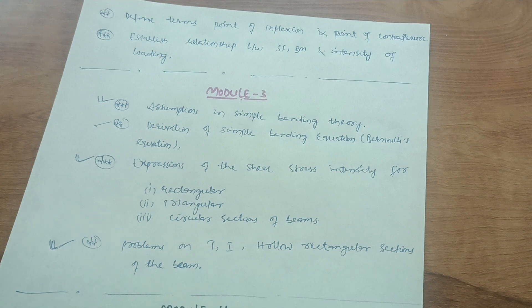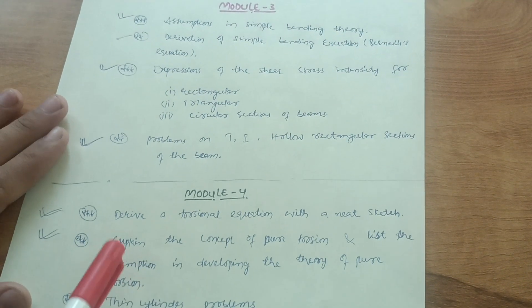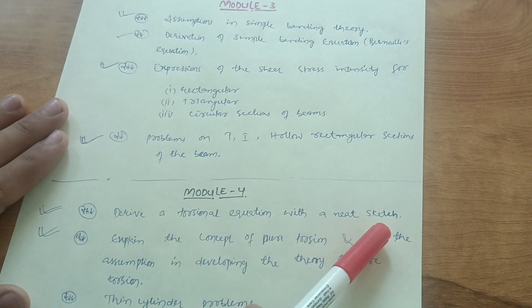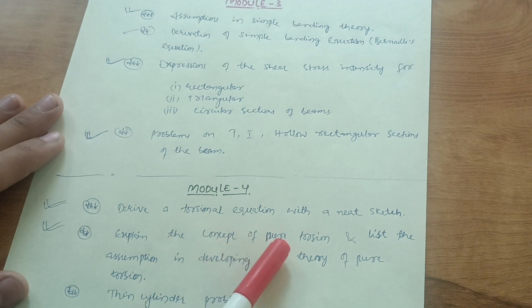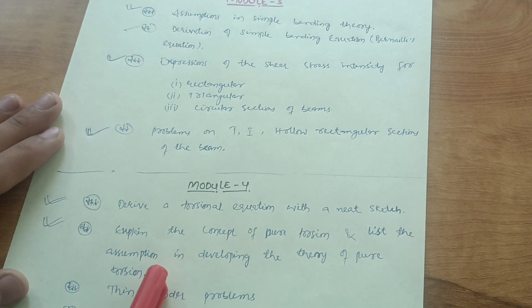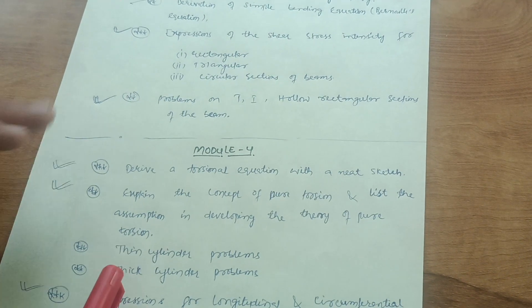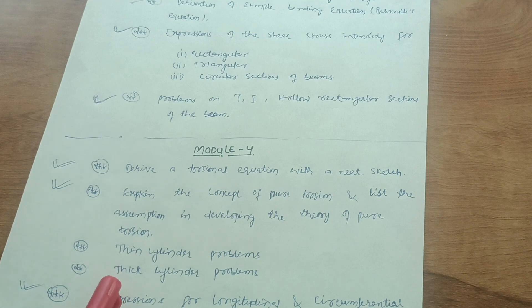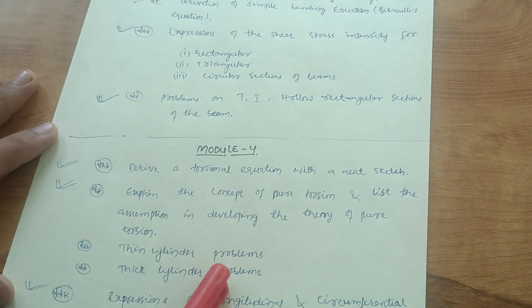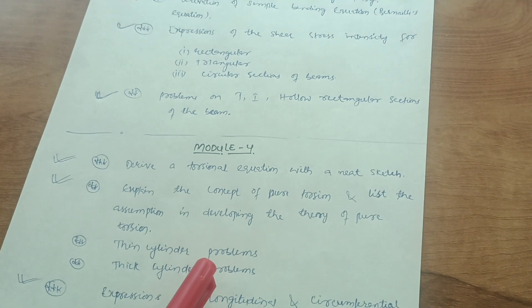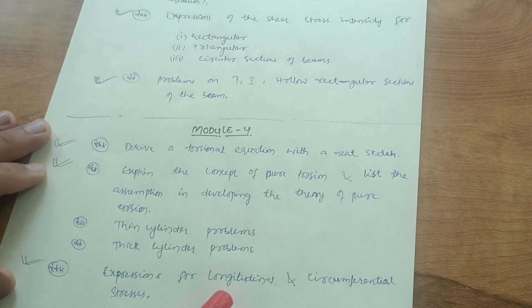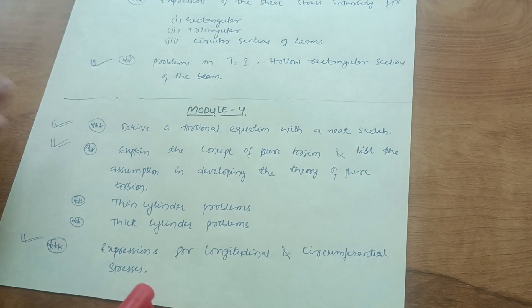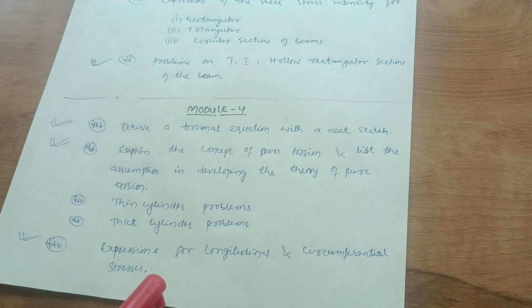Module 4 covers torsion. An important question is: derive the torsional equation with a neat sketch, and explain the concept of pure torsion and list the assumptions in developing the theory of pure torsion. For problems, focus on thin cylinder and thick cylinder problems — these are simpler ones. Also cover the expression for longitudinal and circumferential stresses. These concepts are enough to cover Module 4.